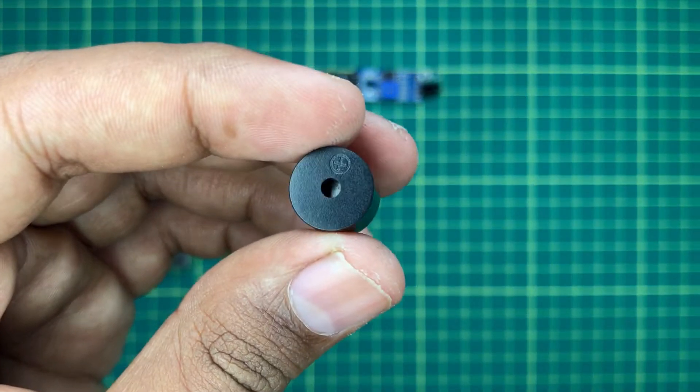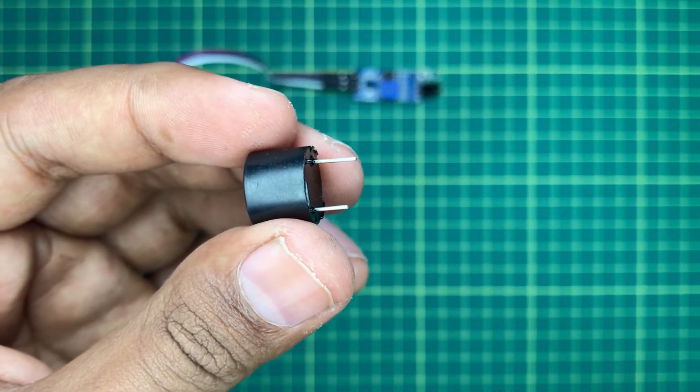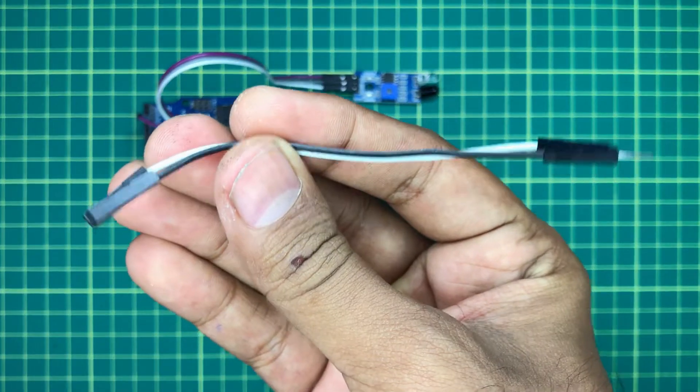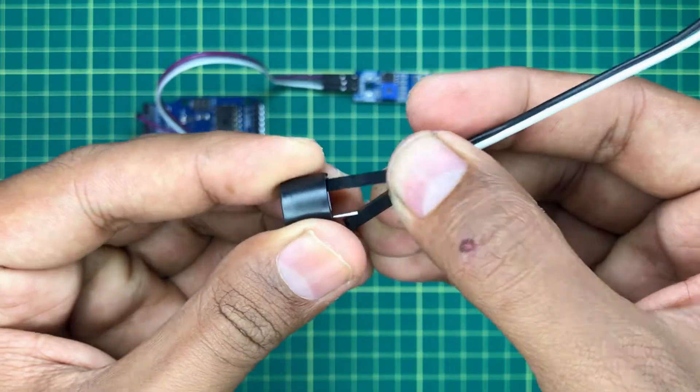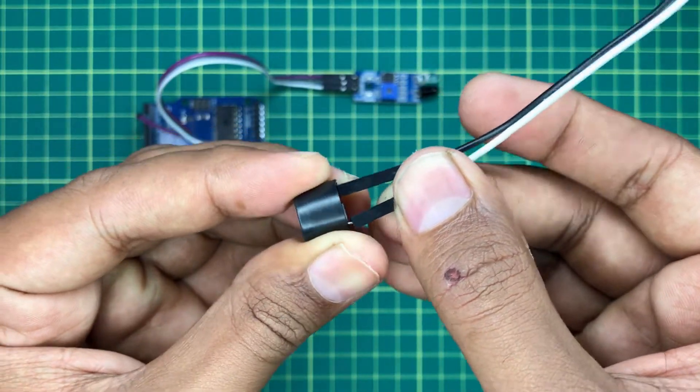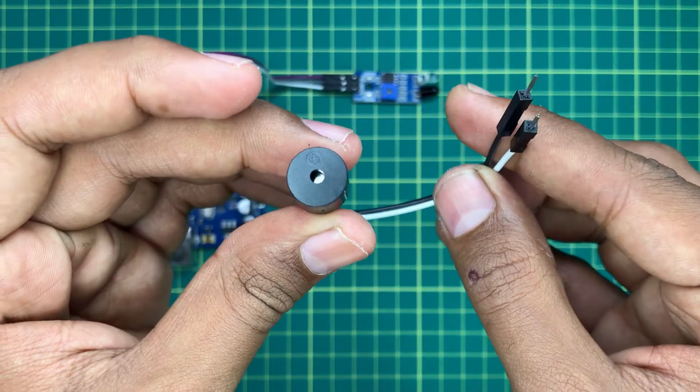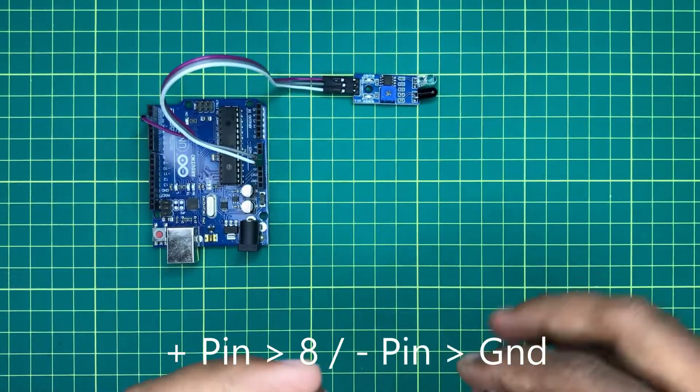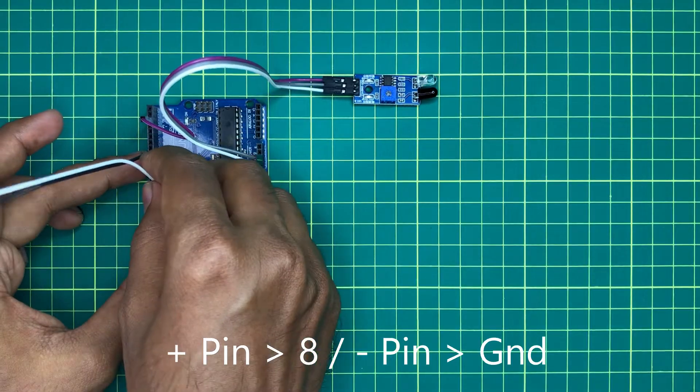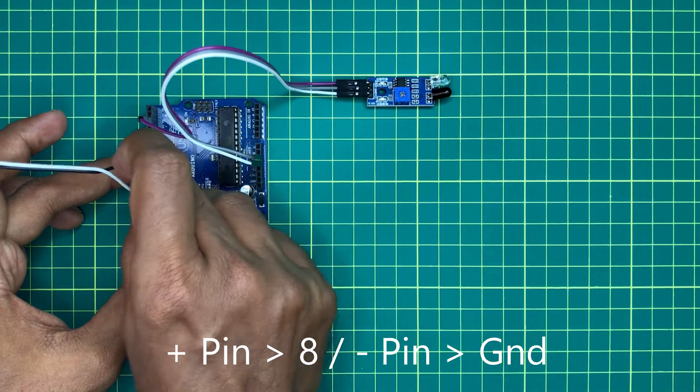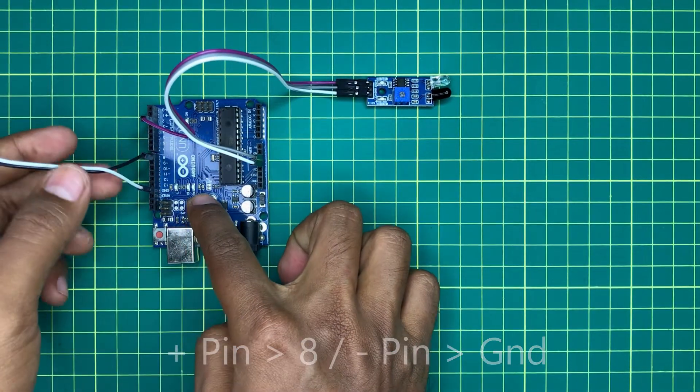Then, take a 5V active buzzer and connect two male to female jumper wires with it. Connect the positive pin with digital pin 8 of Arduino. Connect the negative pin of the buzzer with the ground pin of the Arduino.